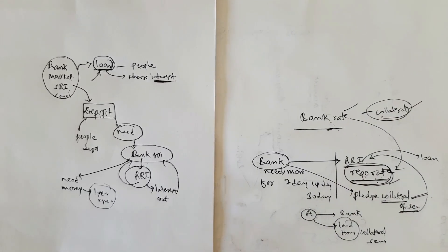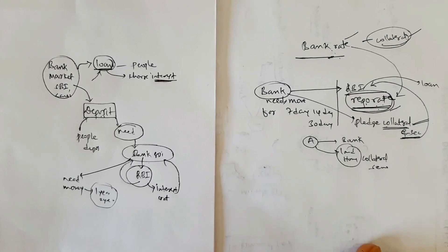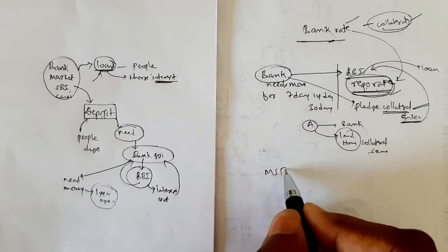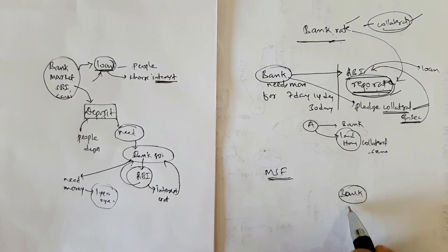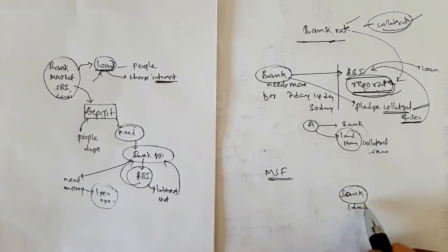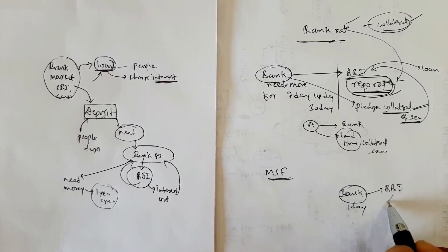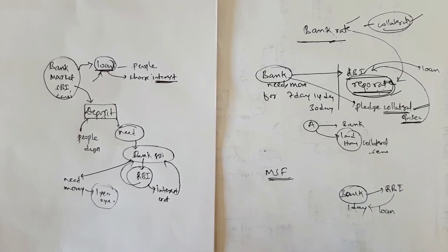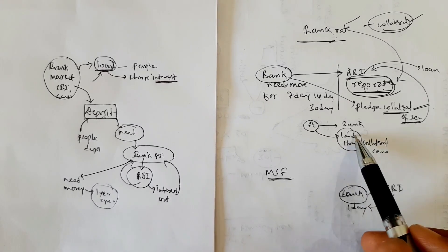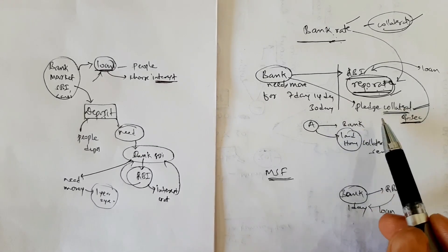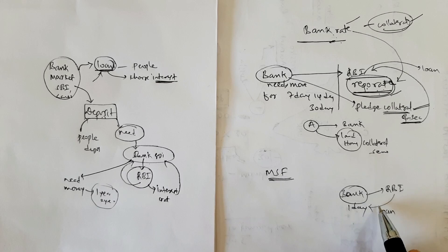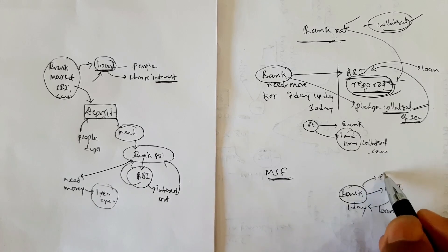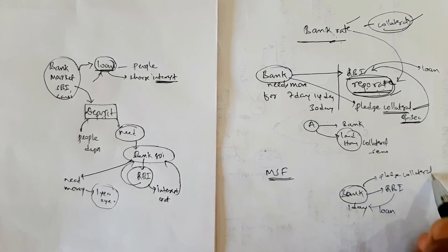Another rate is the Marginal Standing Facility (MSF). Here, the bank needs money for just one day. The bank goes to the RBI and gets a loan for one day — unlike repo rate which covers seven days, 14 days, or 30 days. Under MSF also, the bank needs to pledge collateral.